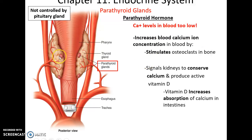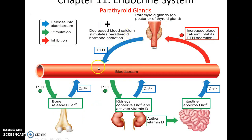The parathyroid glands are on the posterior sides of the thyroid gland and produce parathyroid hormone, which is released when calcium levels are too low. To raise calcium levels, PTH stimulates osteoclasts to break down bone tissue and release calcium into the bloodstream, tells the kidneys to conserve calcium and not secrete it in urine, and stimulates increased production of vitamin D, which causes the intestines to increase absorption of calcium. When calcium levels get high enough, the parathyroid glands shut off production of parathyroid hormone.